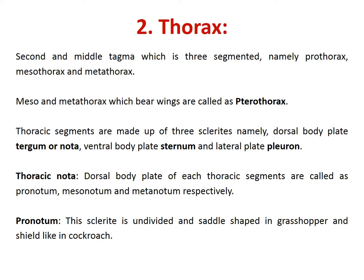Coming to the next part: thorax, the second and middle tagma, which is three-segmented, mainly prothorax, mesothorax and metathorax. The mesothorax and metathorax, where wings are present, are called as the pterothorax.